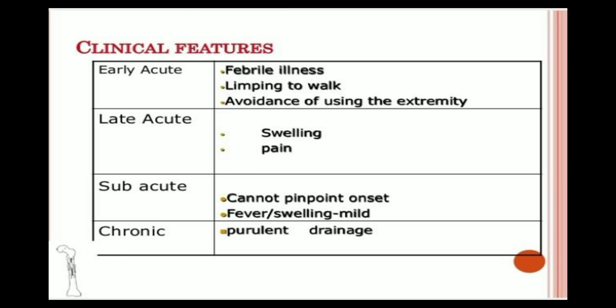Clinical features: In the early acute phase, features include febrile illness, limping to walk, and avoidance of using the extremities. In the late acute stage, swelling and pain will be seen. In the subacute stage, fever and swelling are present with an insidious onset. In the chronic stage, purulent drainage — presence of pus — can be seen at the affected site or joints.